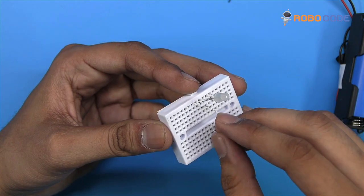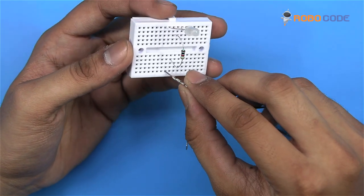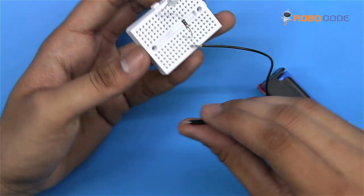Once that's done, take the black wire and insert it in the breadboard as shown.